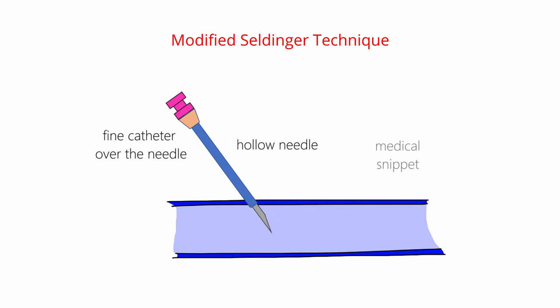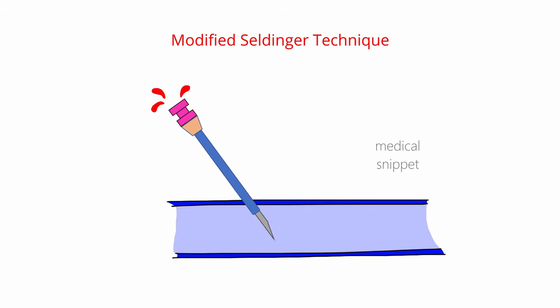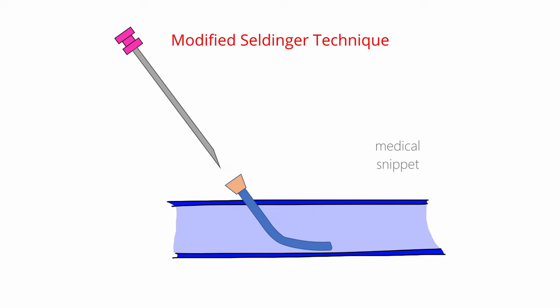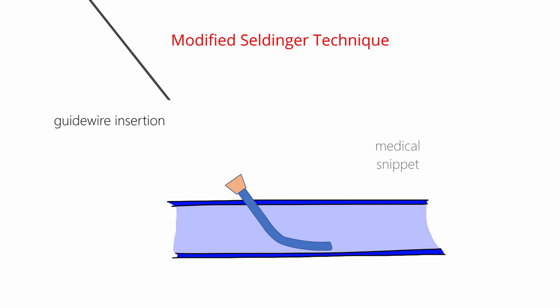Once the needle with the fine catheter is inside the vein, the needle is withdrawn, leaving the catheter inside. Then the catheter is advanced into the vein until the hub reaches the skin. The fine catheter, rather than the needle, is used as a conduit for inserting the guide wire. After this, the procedure is similar to the Seldinger technique.